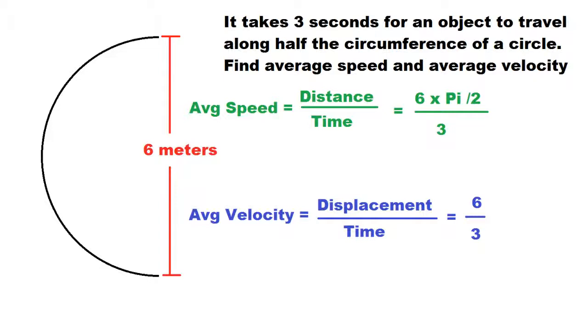So the distance is just half the circumference, or six times pi over two. Then we divide that by three seconds to get average speed.